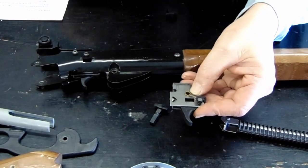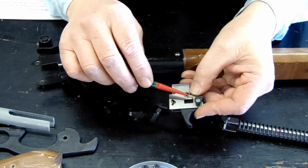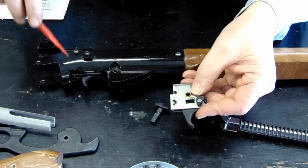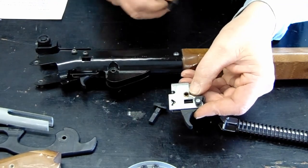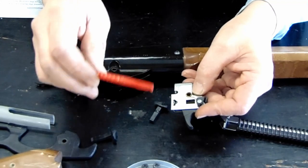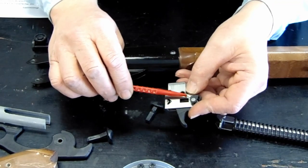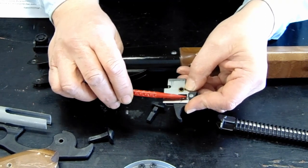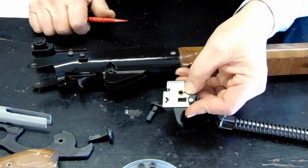And the problem is that we have to be depressing the safety spring while we are inserting the safety, because this spring rides in the notch on the bottom of your safety. So I have a plastic tool that has a little groove cut in it, and I will insert it through the back of the gun, depress that spring, and drop the safety in.